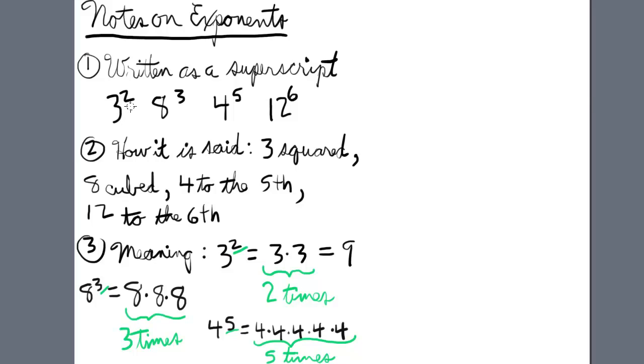So 3 to the 2, 2 is a superscript. 8 to the 3, 3 is a superscript. 4 to the 5, 5 is a superscript. 12 to the 6, 6 is a superscript.